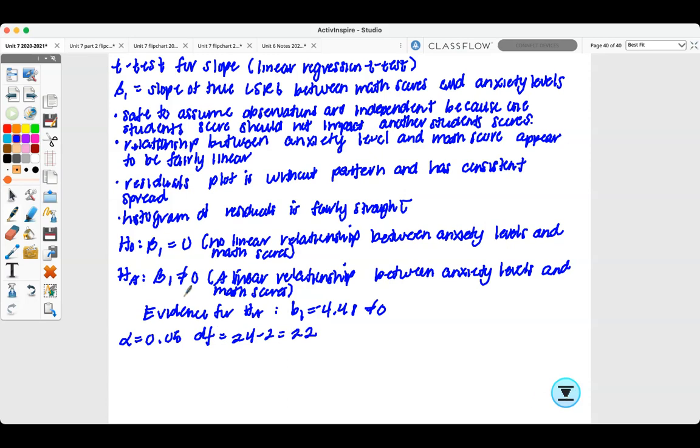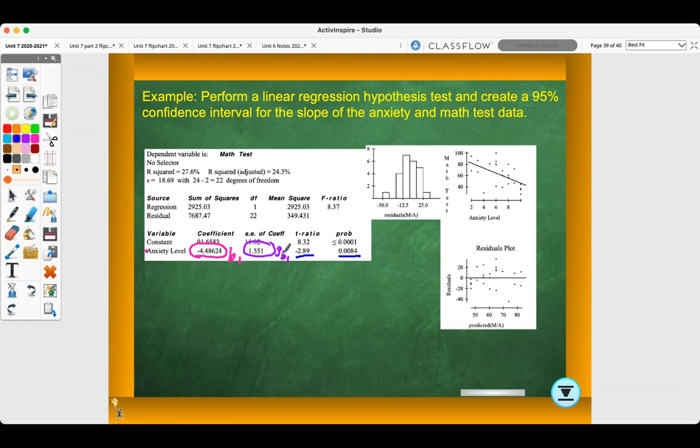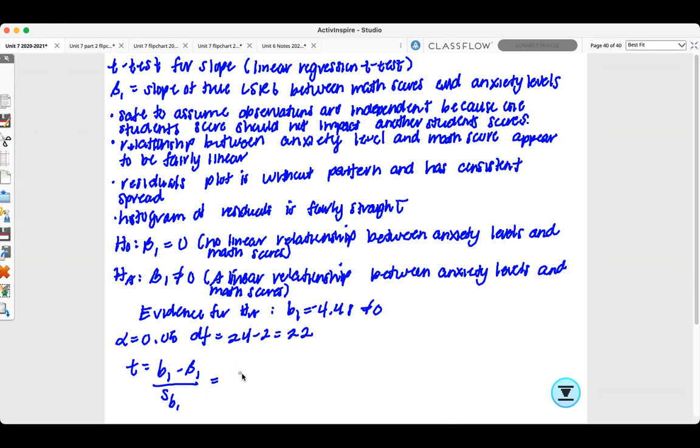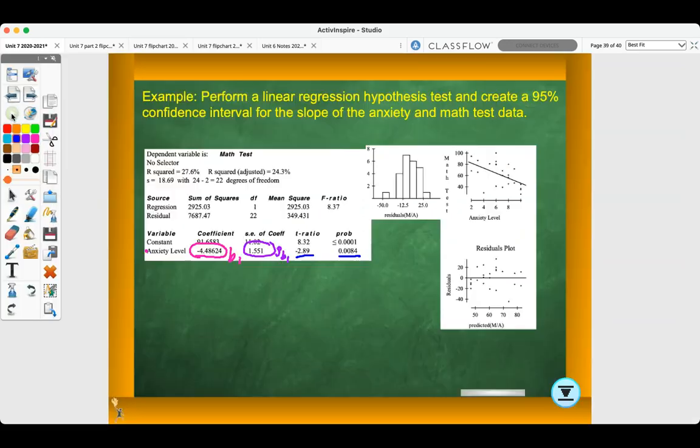To find T, T equals B1 minus beta1 all over the standard deviation of B1, which remember, we pointed those out on our data here. Here's B1, here's the standard deviation of B1. That would be negative 4.48624 minus 0, because our null hypothesis equals 0, divided by 1.551, which equals negative 2.89. So, if you look back at our data here, this negative 2.89 is your T ratio, which is your T value. Then, looking further here, this is your probability under the curve, that's your P value here. So, this would be your test statistic, and this would be your P value.